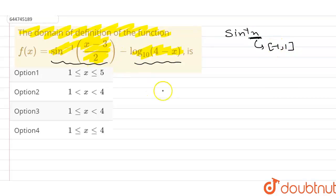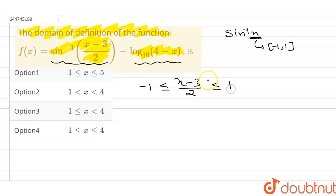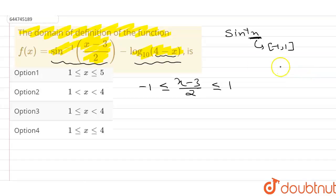So from this we can say that (x-3)/2 lies between minus 1 and 1. For the logarithmic function, log(4-x) is only defined when 4 minus x is greater than 0.